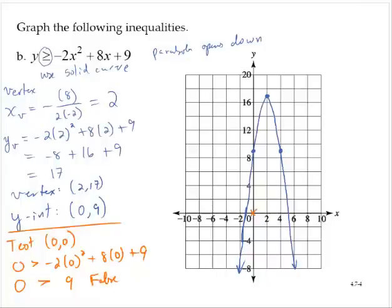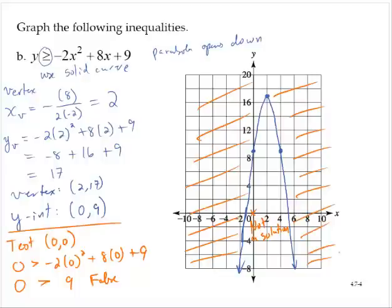So again, 0, 0 is not a solution. And so then none of the points on the inside of the curve are solutions. And so everything outside is a solution. And if I had tested any of those points on the outside, it would have come back as a true statement in the inequality.